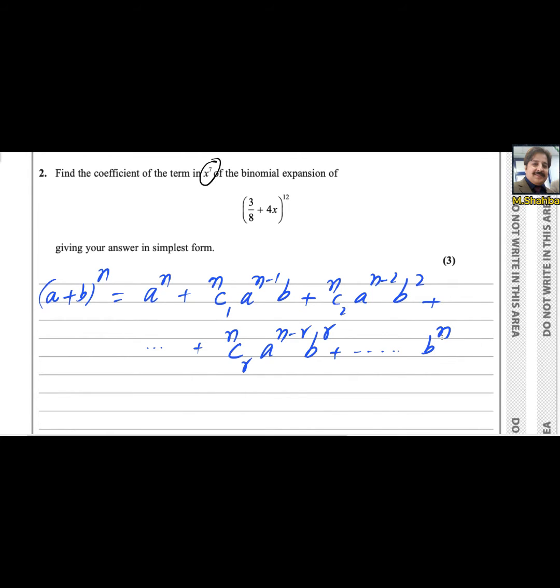Actually in this formula, if you notice the a power is decreasing and b is increasing. Here it was n, then n minus 1, and here b power 1, here b power 0, and the third term n minus 2, here it is b power 2. So it is the third term and this will be r plus 1 term. This is a very important formula.